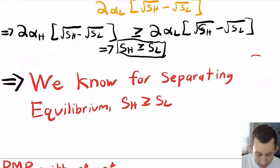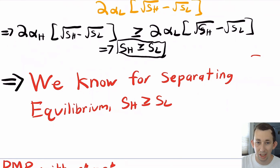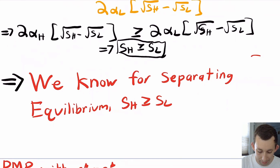This result — that S_H ≥ S_L — might seem obvious, but we need the math to confirm it. If this didn't work out, you would say there's no separating equilibrium where high types and low types get different packages. But since this condition holds, a separating equilibrium is possible and we're good. Now that we've simplified our constraints into one single constraint, it's going to be a lot easier to take the first-order condition.